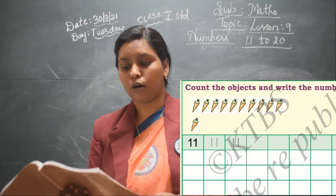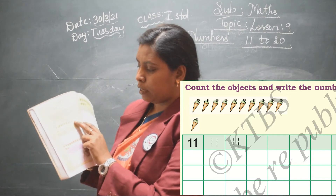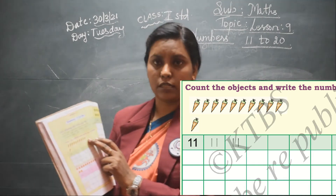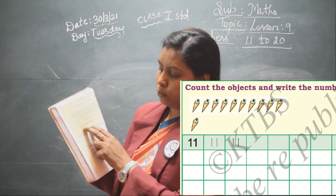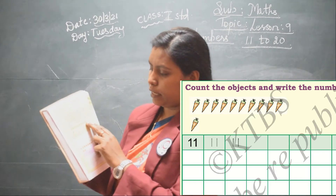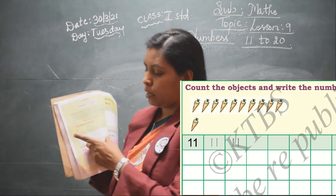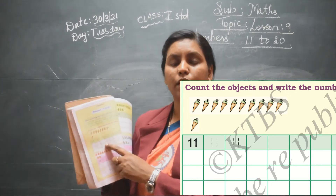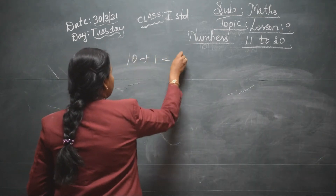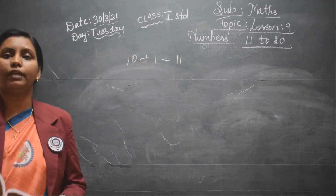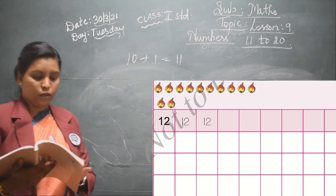On page number 104 they have given you the activity: count the objects and write the numbers. In the first row there are pictures of objects. Count them in the units: 1, 2, 3, 4, 5, 6, 7, 8, 9, 10 — this is a group of 10 carrots, plus 1 will become 11. So 10 plus 1 becomes 11. The number after 10 is 11.